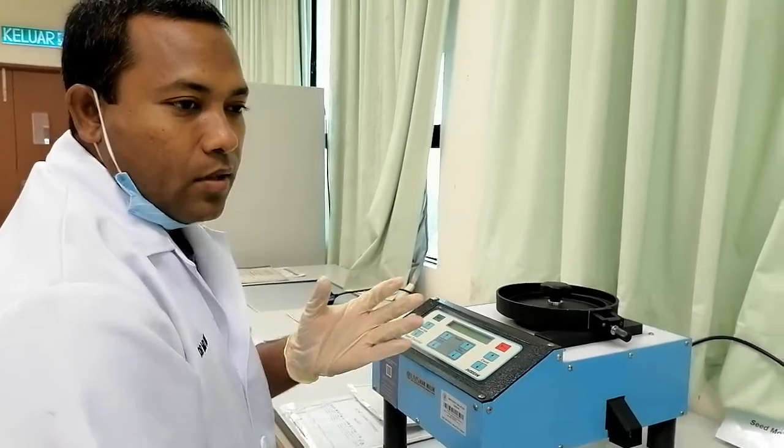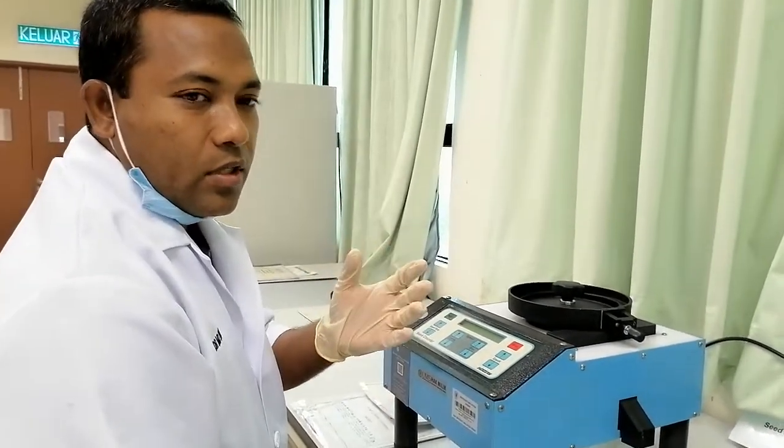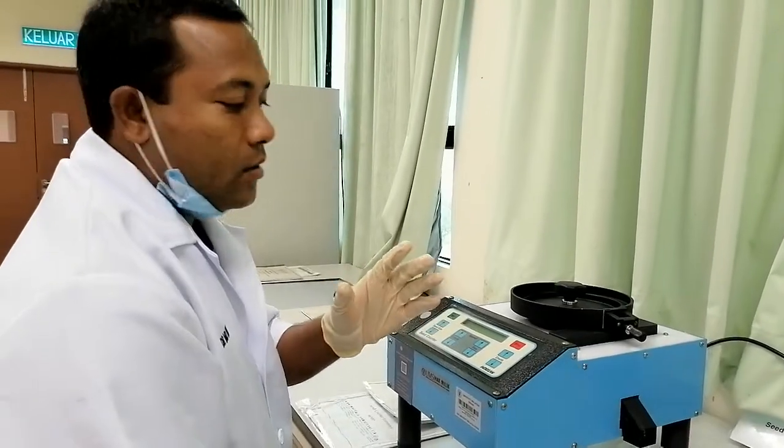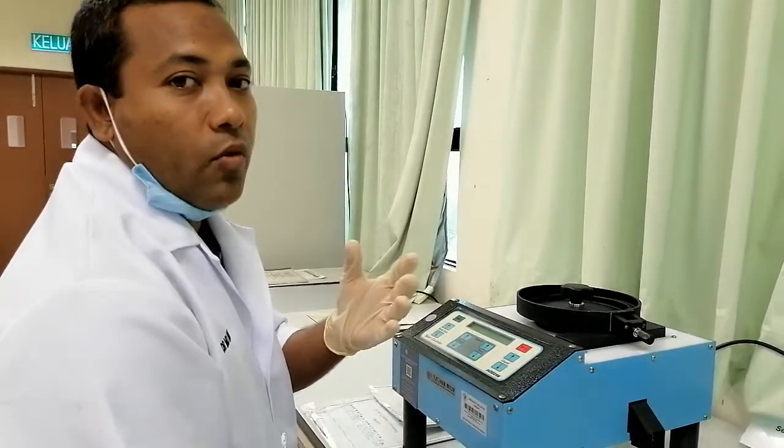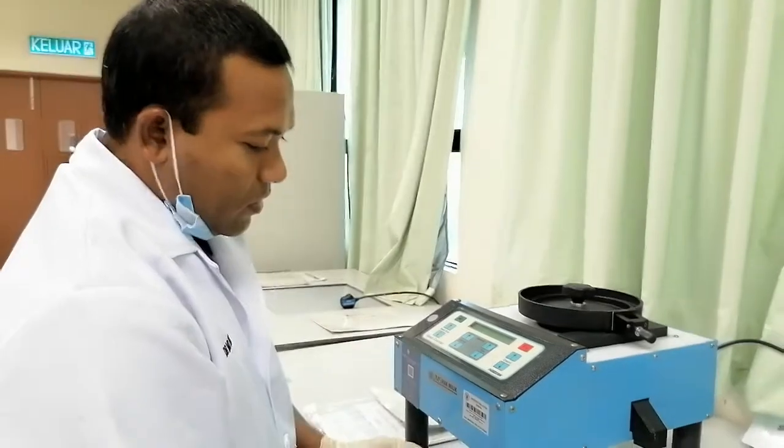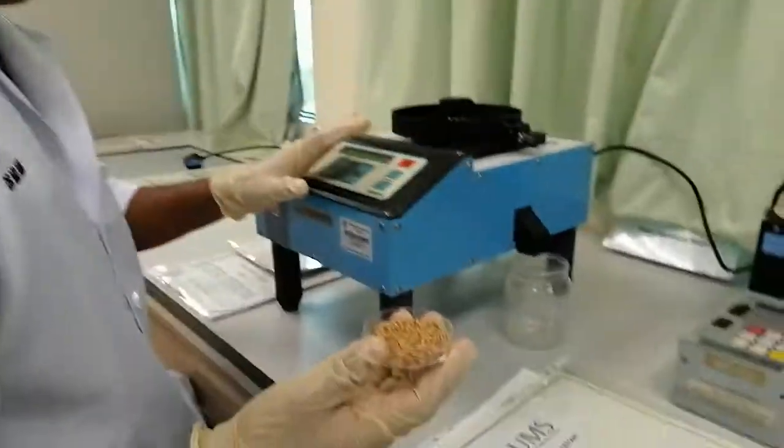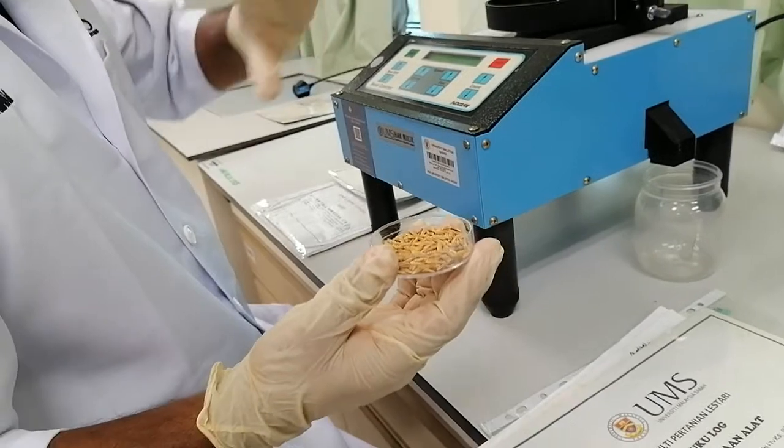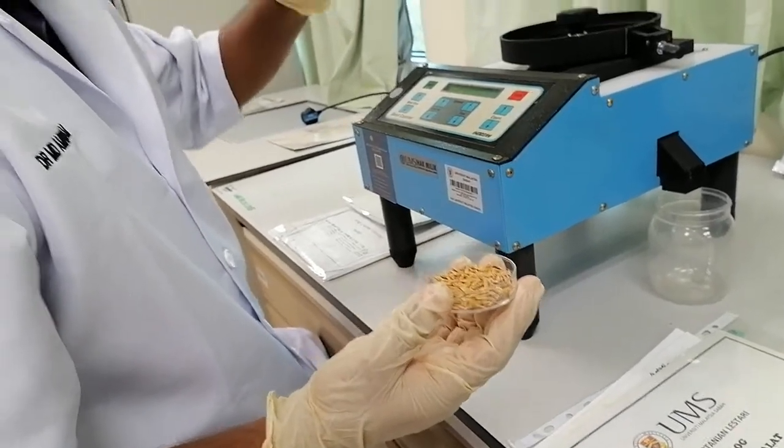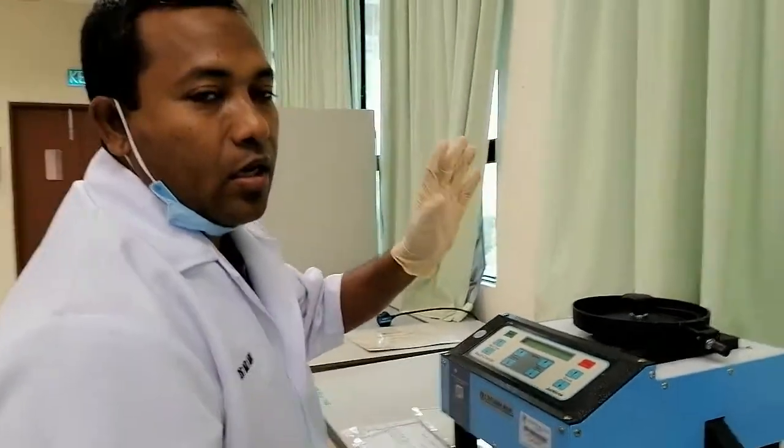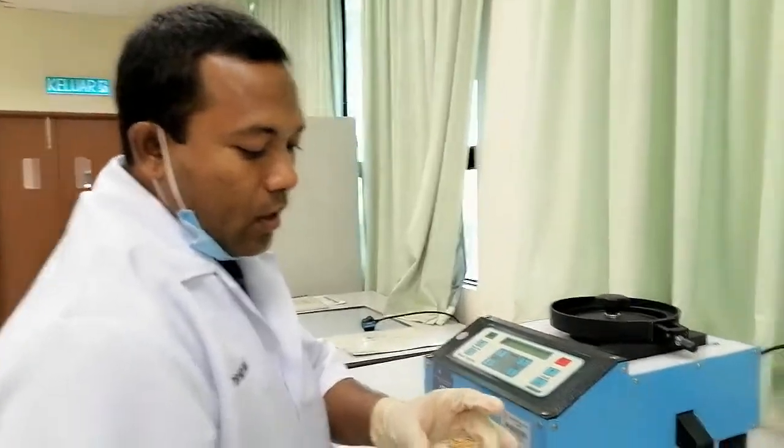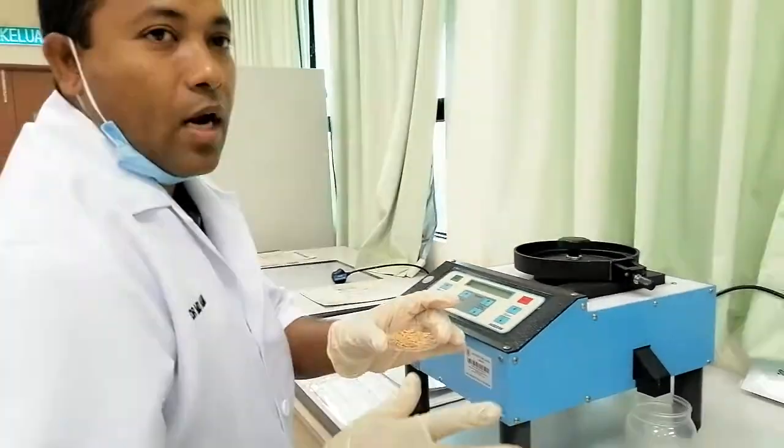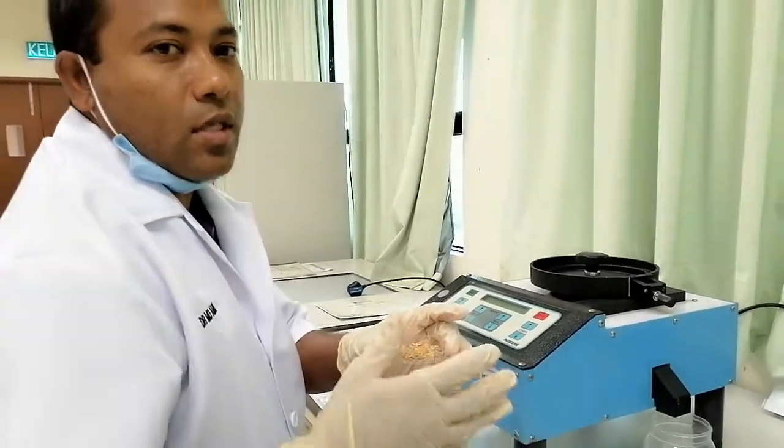Suppose for any experiment after harvesting, we need to count 100 seed or 1000 seed weight. So if it is rice, sometimes very tedious to count one by one because you have maybe so many replications, 5 replications, 7, 10 replications. So every replication we have to count the seed for 100 seed weight or 1000 seed weight.